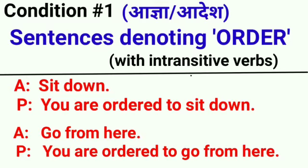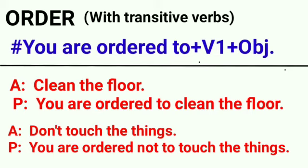See the first condition: sentences denoting order. मतलब जिस imperative sentence में आज्ञा देने की बात हो या आदेश करने की बात हो। पहले intransitive verbs के साथ देखेंगे। For example: 'sit down' — इसका passive बनाएंगे: 'you are ordered to sit down'. दूसरा: 'go from here' — 'you are ordered to go from here'. मतलब order वाले जितने sentences होंगे, उनको passive form बनाते वक्त 'you are ordered' से start करेंगे।